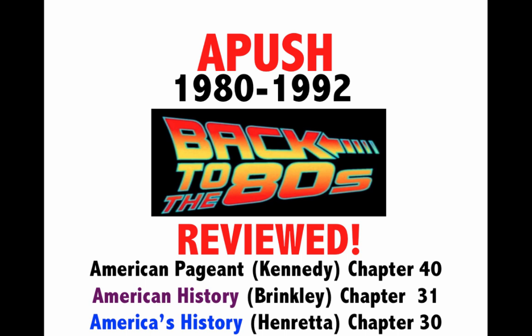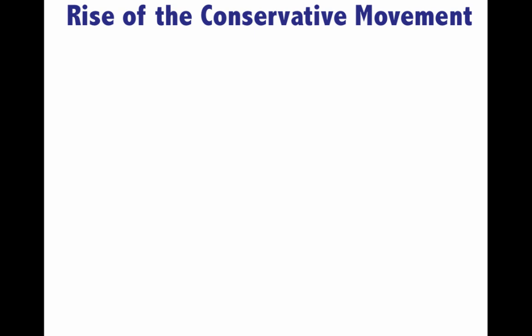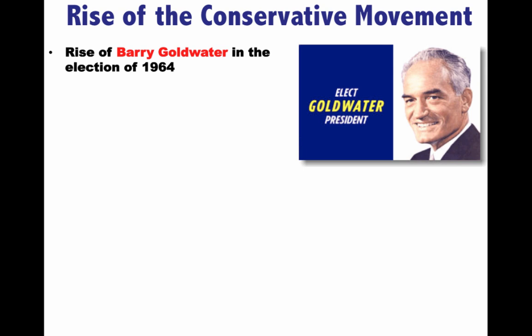You can't understand the rise of Reagan without understanding the rise of the conservative movement. You can trace this all the way back to the election of 1964, when Barry Goldwater ran as the Republican candidate against Lyndon Johnson. Although he loses, the conservative movement is really starting to become a national movement with some influence. Nixon gets elected in 1968 and starts adopting more Republican policies at the federal level.